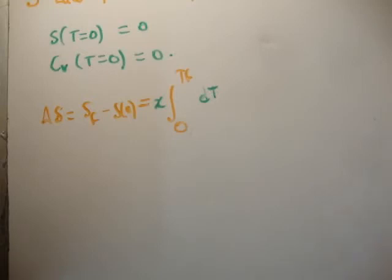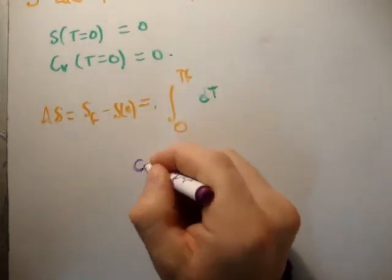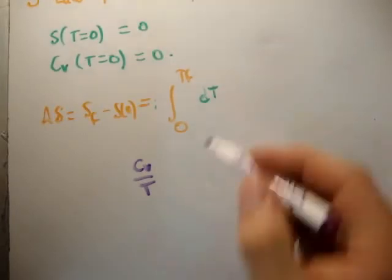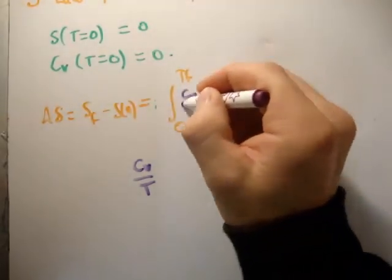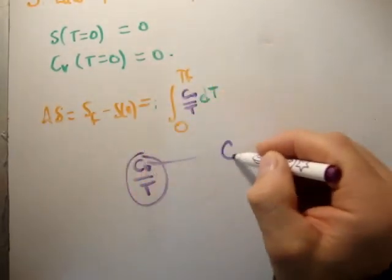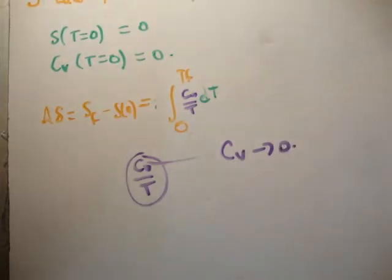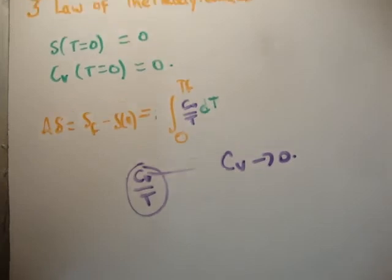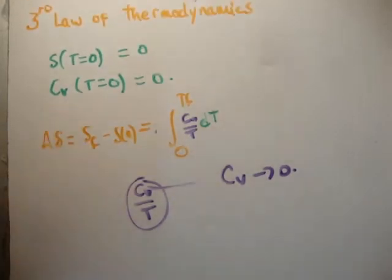Finally, I said here this factor was C sub V over T. Now in order for this integral not to diverge, this implies that C sub V also goes to 0 as the temperature goes to 0. That's the implication of this particular equation. So that means we have two different ways of saying the third law of thermodynamics. At 0 Kelvin, the multiplicity is 1, entropy is 0, or the heat capacity is also 0.